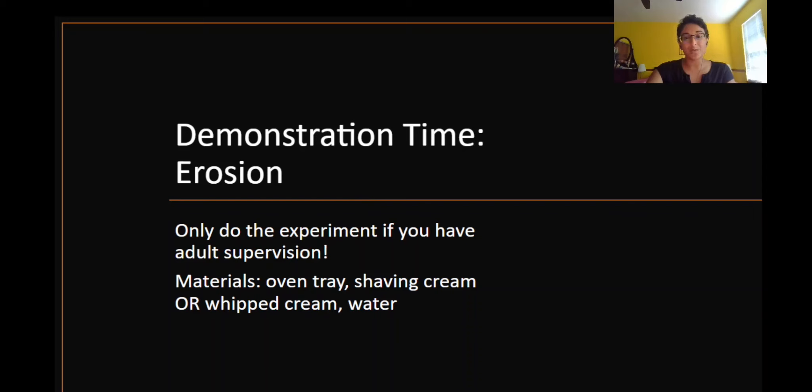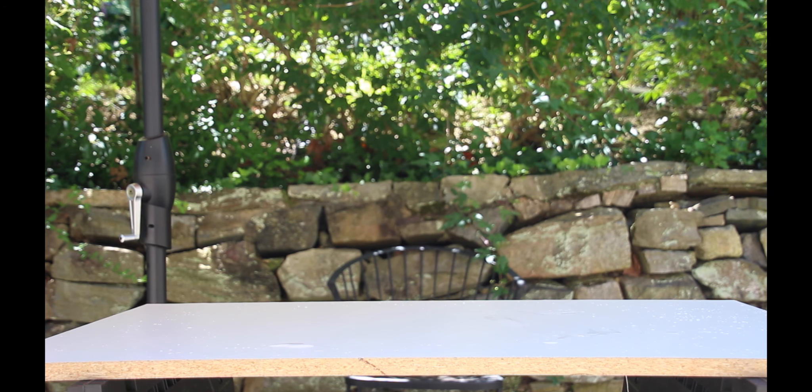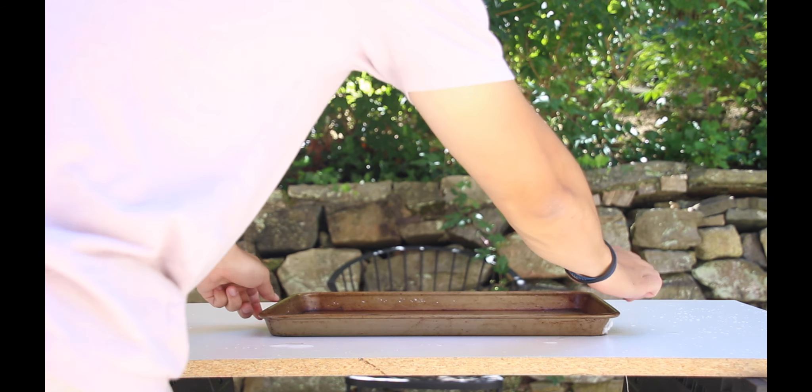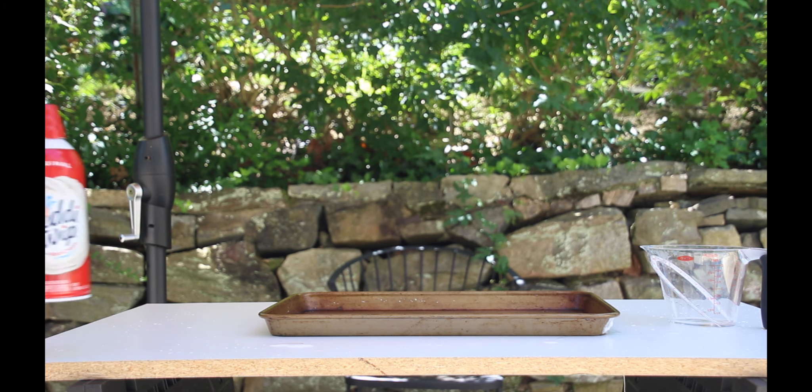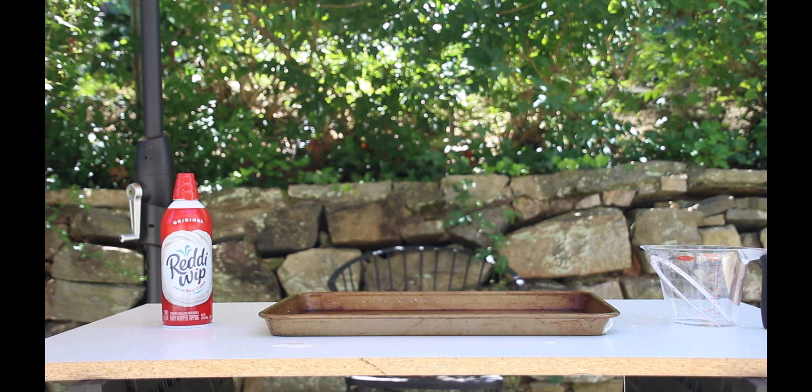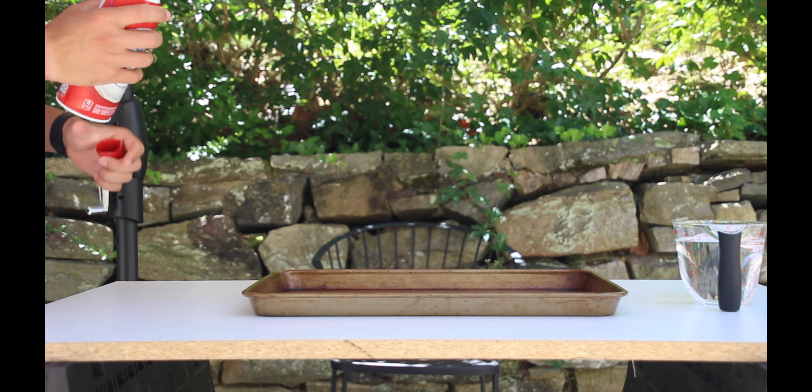Let's watch a demonstration showing what erosion can look like. You can do the experiment if you have adult supervision, or feel free to just follow along. For those of you participating, you'll need an oven tray, whipped cream or shaving cream, and one to two cups of water for this little demo. If you are doing this demonstration yourself, all you need is an oven tray, one to two cups of water, whipped cream or shaving cream. I'm using whipped cream here because it is more visible in the video.